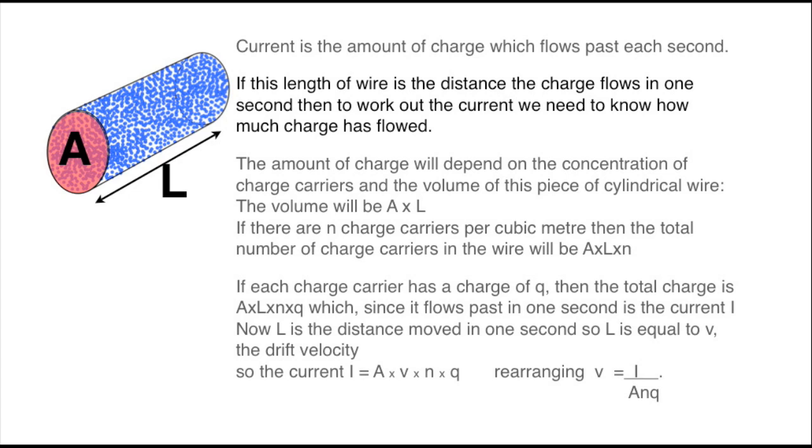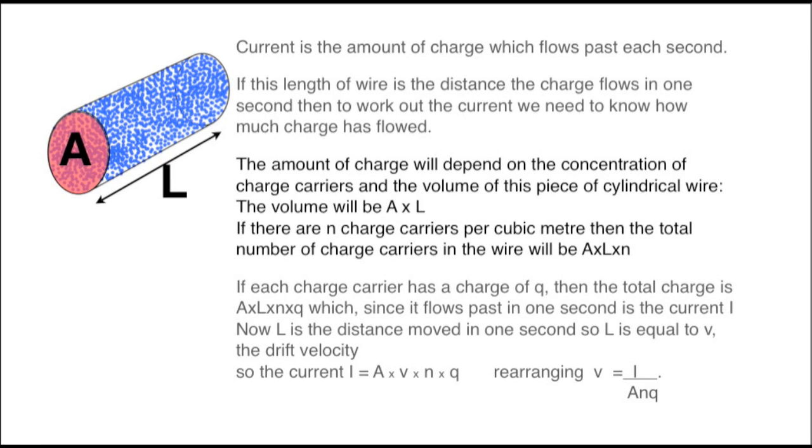That total will depend upon the concentration of charge carrying electrons in the wire and on the volume of the wire. The volume is the cross sectional area times the length. And the total number of charge carriers will be cross sectional area times length times n, where n is the number of charge carriers per cubic meter.